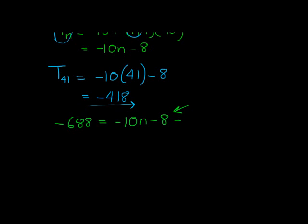Add an 8 on both sides. Okay, which on the left hand side gives me negative 680 is equal to negative 10n. And then n is equal to 68. I'm sure you could do that in your head as well.